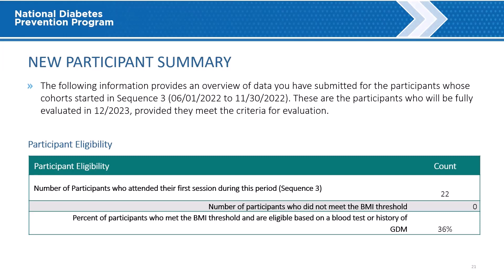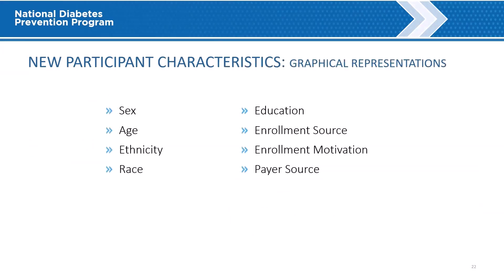New Participant Summary. The New Participant Summary is similar in layout and content to the Ongoing Participant Summary, and will only be shown if there are participants whose cohort held their first session in these sequences. Graphical representations of new participant characteristics are shown in this section as were displayed for the concluded participants, but will not be shown for the purposes of this presentation.